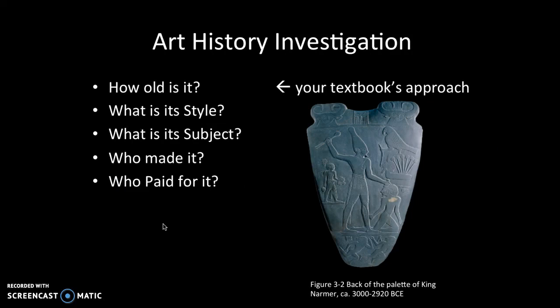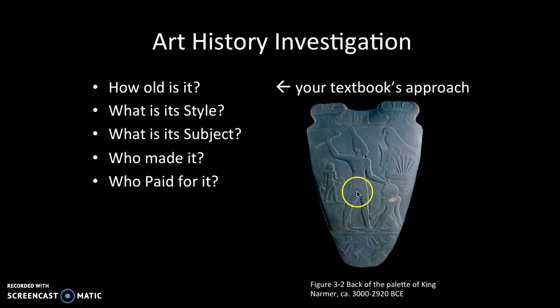Your textbook also asks who paid for it — who's the patron, who commissioned this artwork to be made, or who chose for it to be made? It could be a king commissioning armor, for example. Sometimes who paid for it influences how it gets made. If you're the king paying for the artwork, you're going to say: make me look really great, powerful and large.